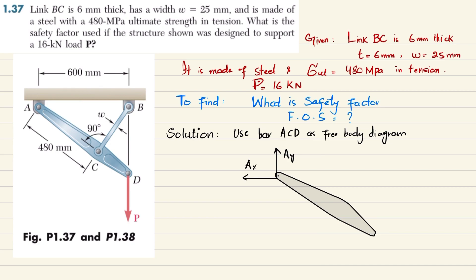Similarly, this is the point C where we have a load FBC acting in this direction. And this is point D where we have a load of P acting on it.